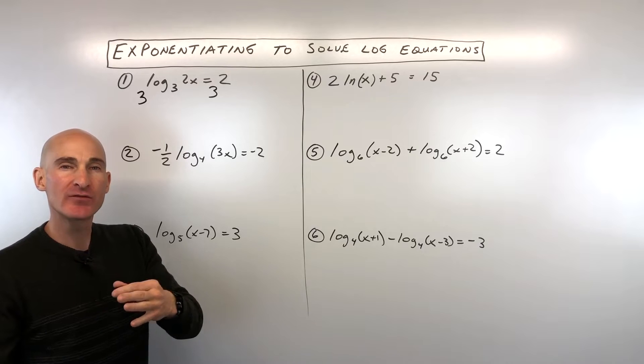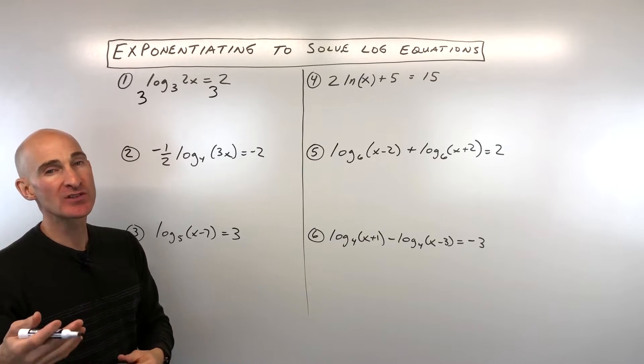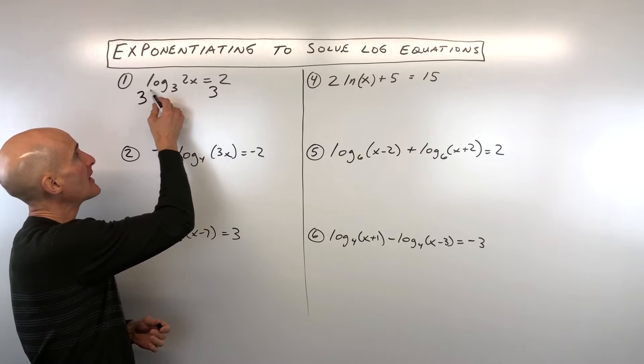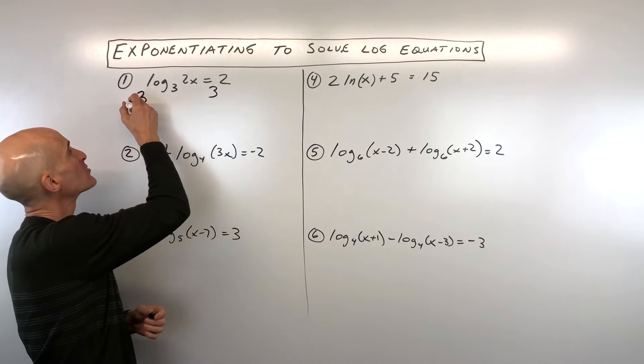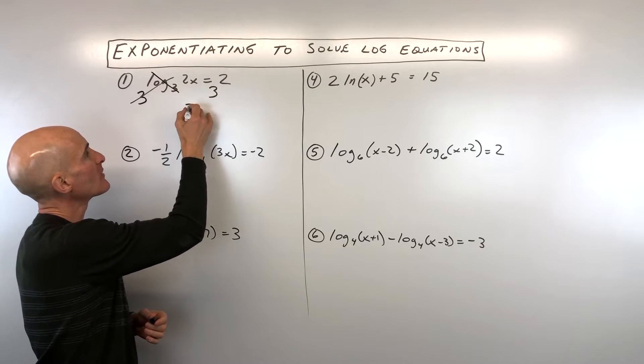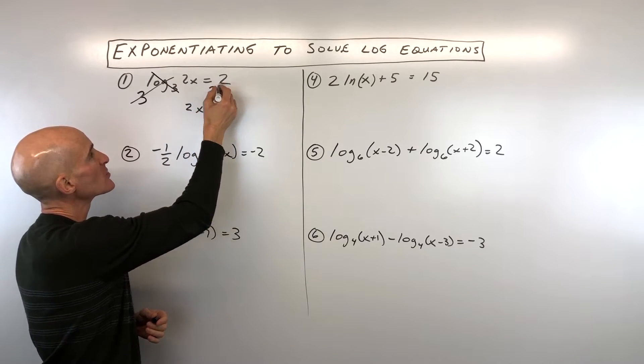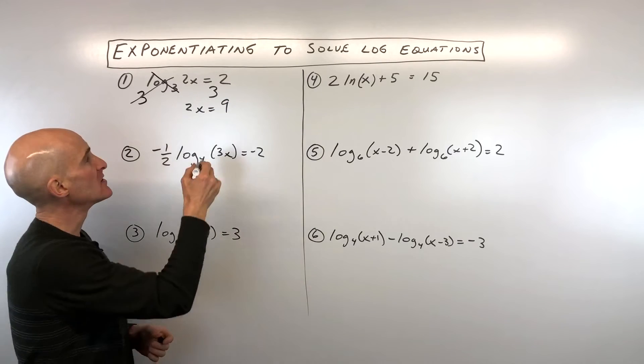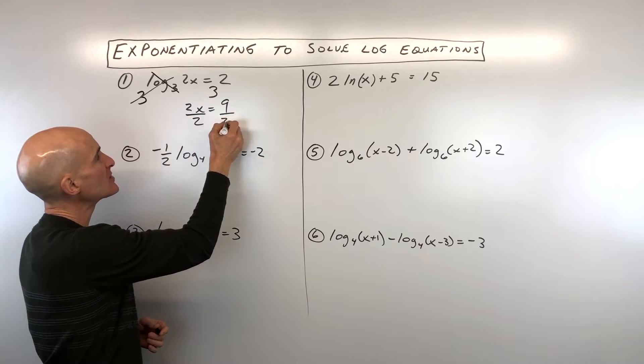Just like when you multiply and divide, those are inverses. Adding and subtracting those are inverses. In this case, taking the log and exponentiating those are inverses, which means that they undo one another and we're left with 2x equals 3 squared, which is 9. Now all we have to do is solve for x by dividing both sides by 2.